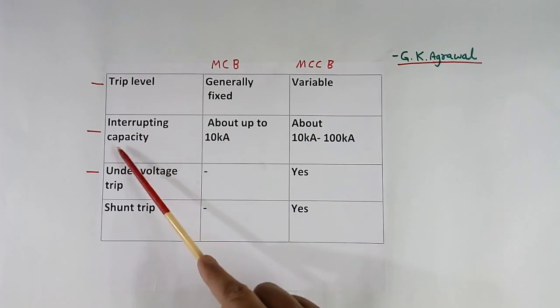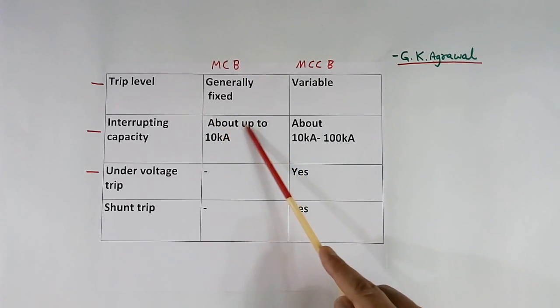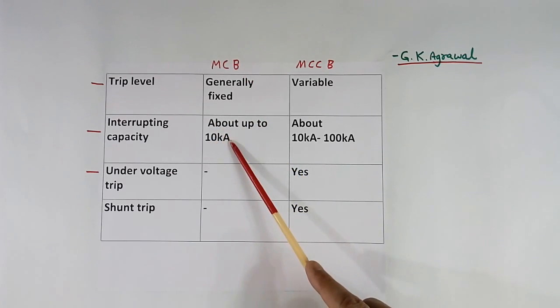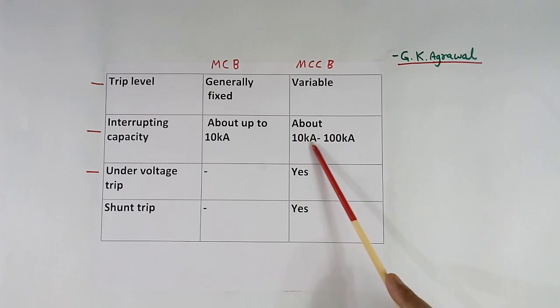Interrupting capacity, i.e., breaking current capacity. In MCB, it is about up to 10 kA. In case of MCCB, it is about 10 kA to 100 kA.